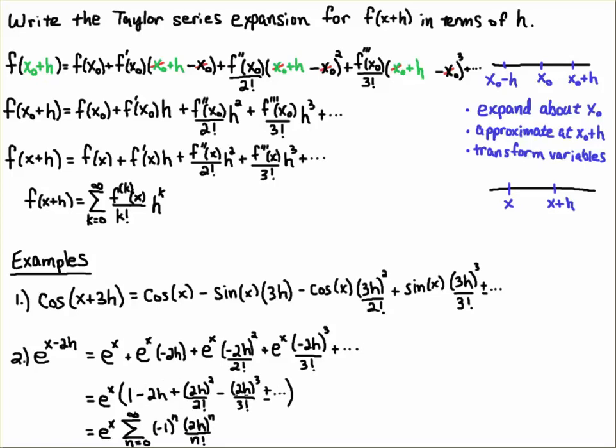And then I can actually write this in a compact notation, minus 1 to the n, 2h to the n over n factorial. And I'm summing from n equals 0 to infinity, and the e to the x is sitting out here. And then if somebody wanted you to evaluate this at a specific point, they might say, like, what's e to the point 2 minus 2h? And you would put in e to the point 2 here and calculate that out.